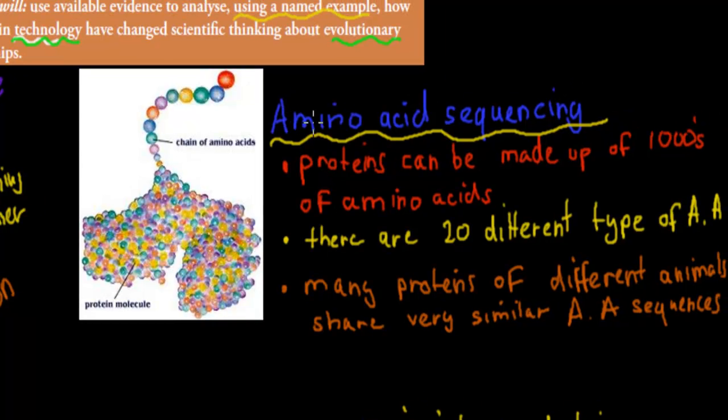So then we have another technology called amino acid sequencing. If you guys remember, proteins, which are the building blocks of our body, they are made up of amino acids. So you have a long chain of amino acids, and that's a protein. So what you have here is you can imagine you have one of these balls is an amino acid. And if you have thousands of them, so I've written here, proteins can be made up of thousands of amino acids. You have thousands of them in a row. That's called a protein.